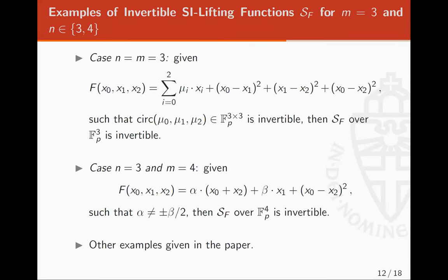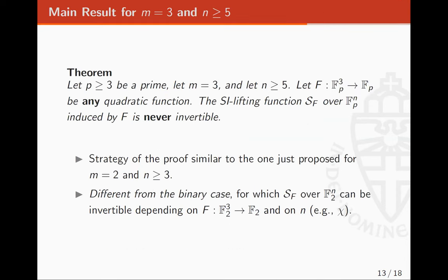For M equal to three and N equal to three or four, there exist functions f for which S_f is invertible. But for M equal to three and N at least five, if f is quadratic then S_f is never invertible. This is very interesting because it is exactly the opposite of what happens in the binary case: in the binary case the chi function provides an invertible function over F2^N, but in the prime field case it is not possible to set up a shift-invariant lifting function of this form that is invertible.